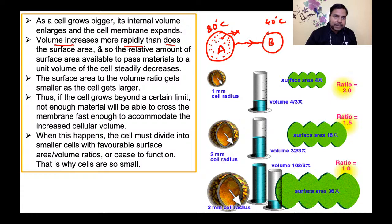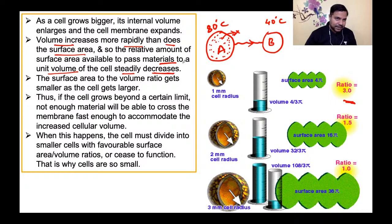Volume increases more rapidly than does the surface area — यह ratio से mathematically समझ सकते हो। The relative amount of surface area available to pass materials to a unit volume of a cell steadily decreases। And the surface area to volume ratio gets smaller as the cell gets larger।